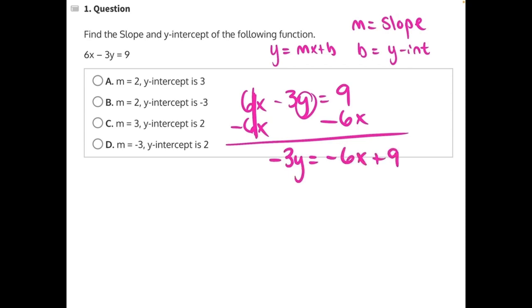Notice I could have said 9 minus 6x, but to make it look more like slope-intercept and to kind of save myself a step, I went ahead and rearranged it to be the negative 6x came first and then the positive 9 came second.